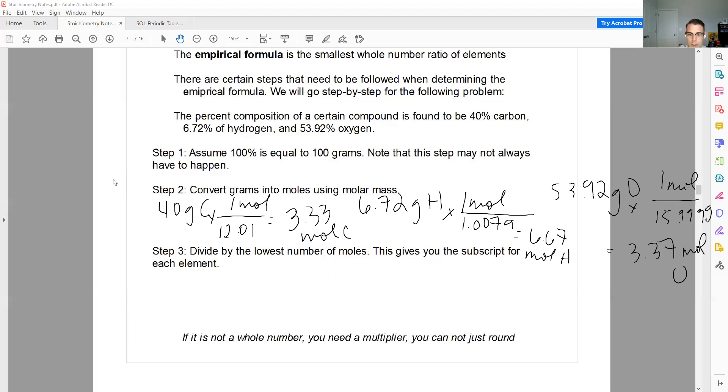Step three, divide by the lowest number. So look at each of your number of moles and divide by the lowest. So that's going to be 3.33. So take each one and divide by 3.33. 3.33 divided by 3.33. Carbon will equal one. 6.67 divided by 3.33. Hydrogen will give me two. And the oxygen, 3.37 divided by 3.33, is going to be so close to one that the rounding isn't going to affect my answer at all. And so we can just round it up to one. It's like not a big jump to do that. And so those are the subscripts for your compound. And so my empirical formula is going to be CH2O.